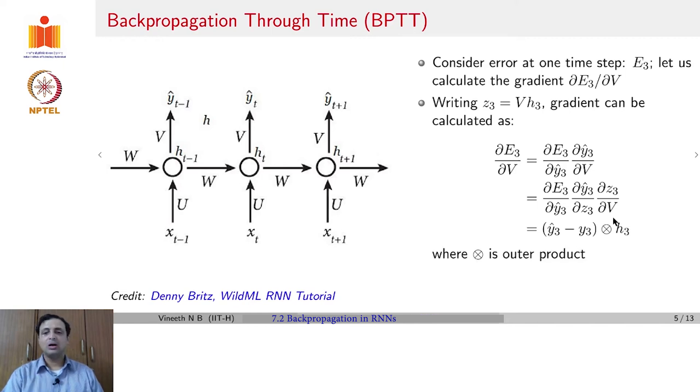You would have this by chain rule as ∂E_3/∂Y_3 hat times ∂Y_3 hat/∂Z_3 times ∂Z_3/∂V. Now, this assuming that the activation function is trivial, and let us assume that ∂E_3/∂Y_3 hat, if you use mean squared error or cross entropy, boils down to a simple Y_3 hat minus Y_3, where Y_3 hat is the predicted output and Y_3 is the expected output. And ∂Z_3/∂V would be H_3 because of the definition of Z_3 itself.